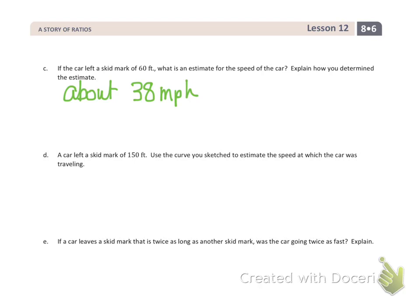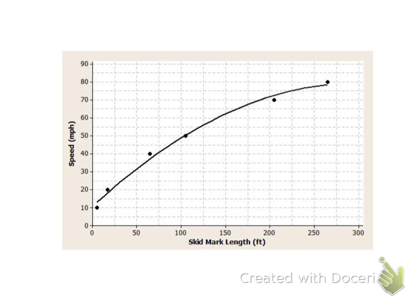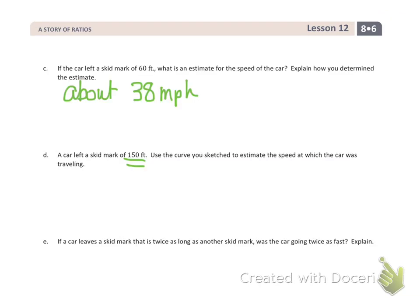A car left a skid mark of 150 feet. Using the curve to estimate the speed: 150 feet is right here on the graph, and that value falls between 60 and 65 miles per hour — almost exactly in the middle of that range. So we'd call it about 62.5 miles per hour for a skid mark of 150 feet.